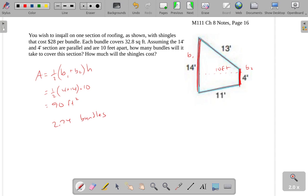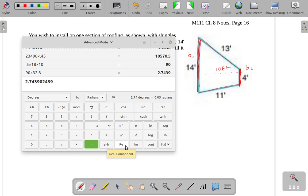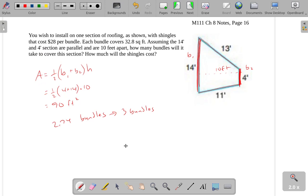And if the bundles cost $28 each, well, in this instance, you can't really buy a partial bundle. I'm not exactly sure why you would be roofing just one small section of a house, but I guess that's what we're figuring out here. I'm going to go ahead and call this 3 bundles, because you can't buy a partial bundle. So that means you have to buy 3 bundles, and when we take 3 times $28, because the bundles are $28 each, this would cost you $84.